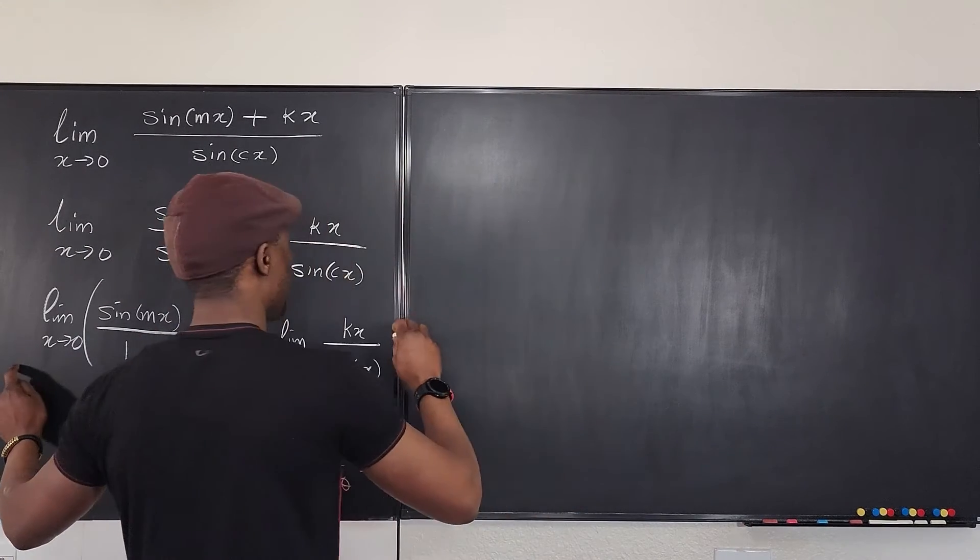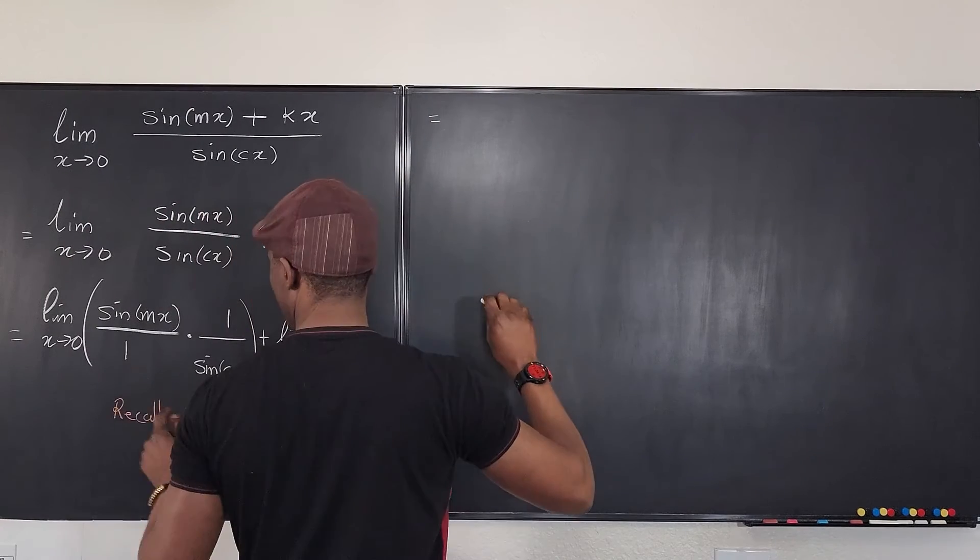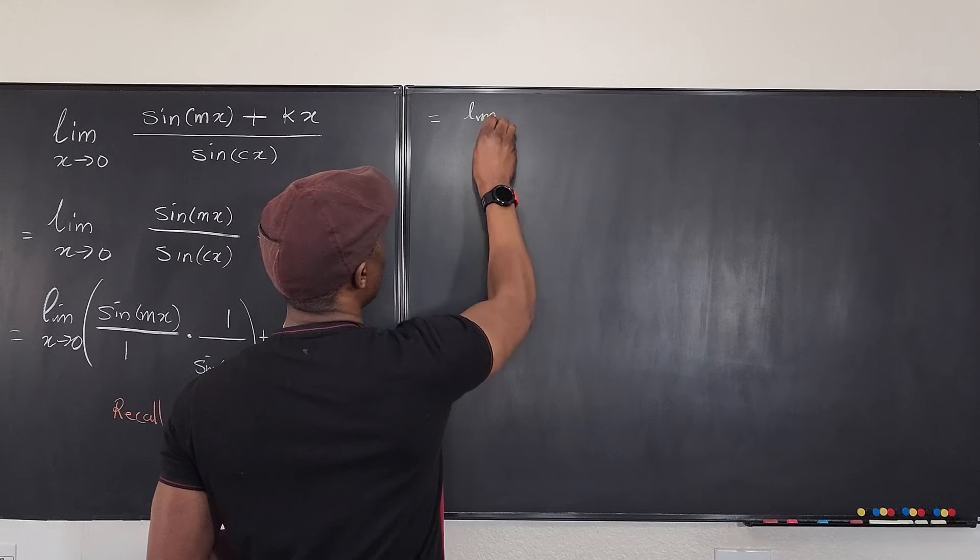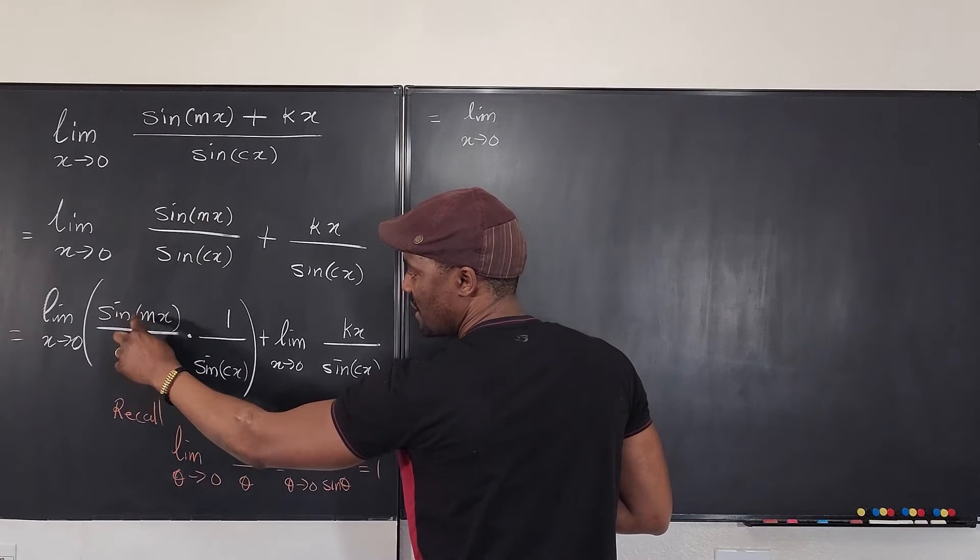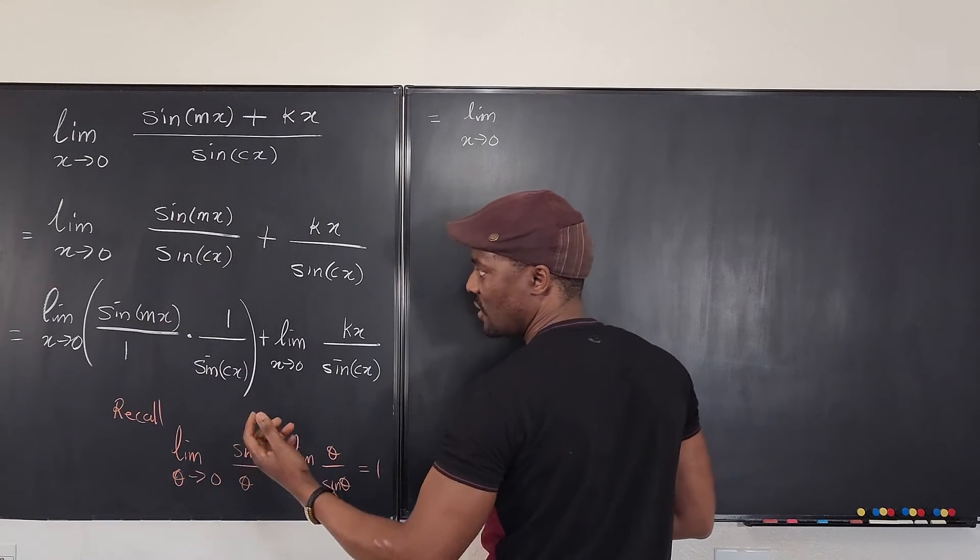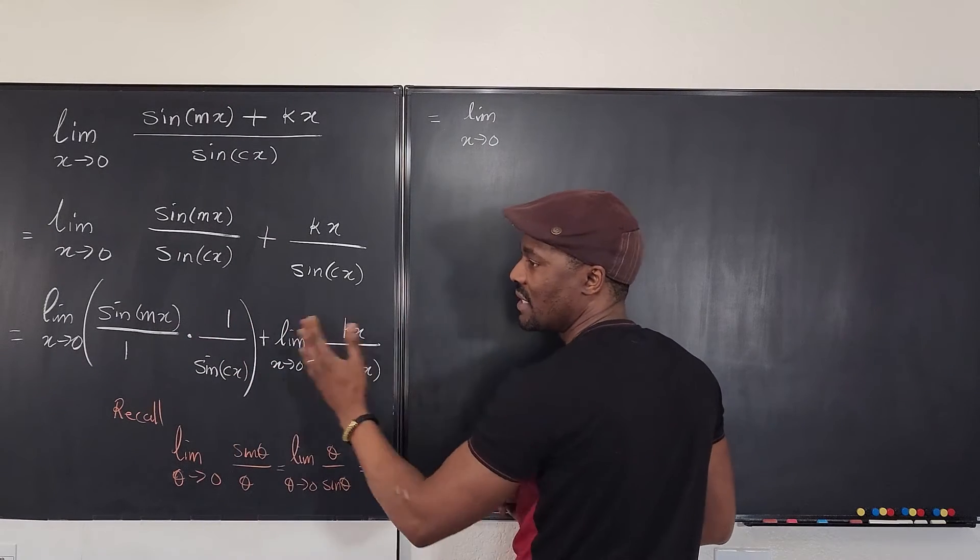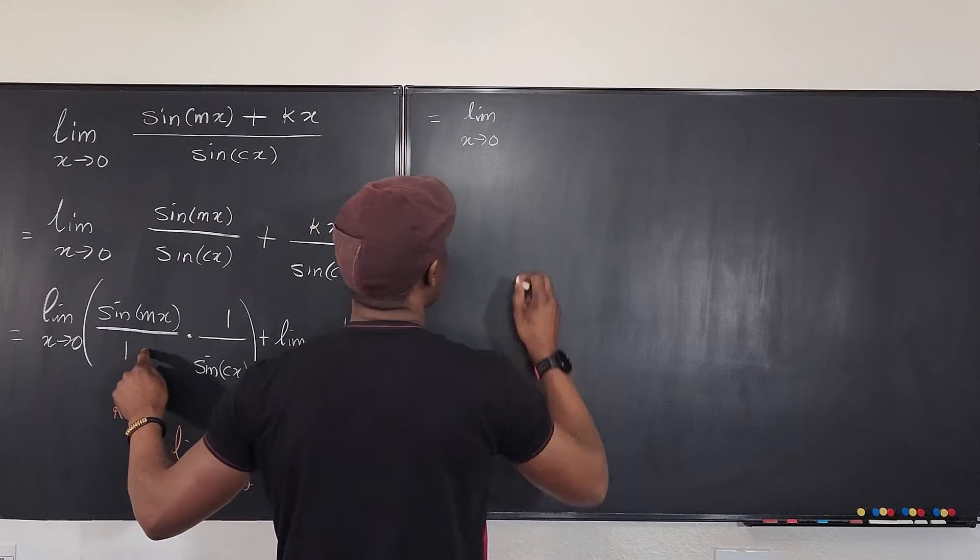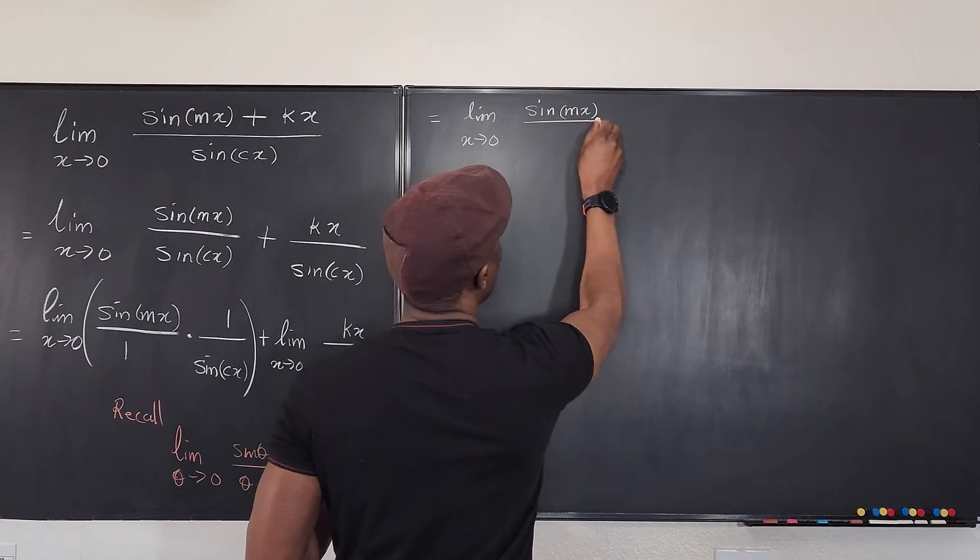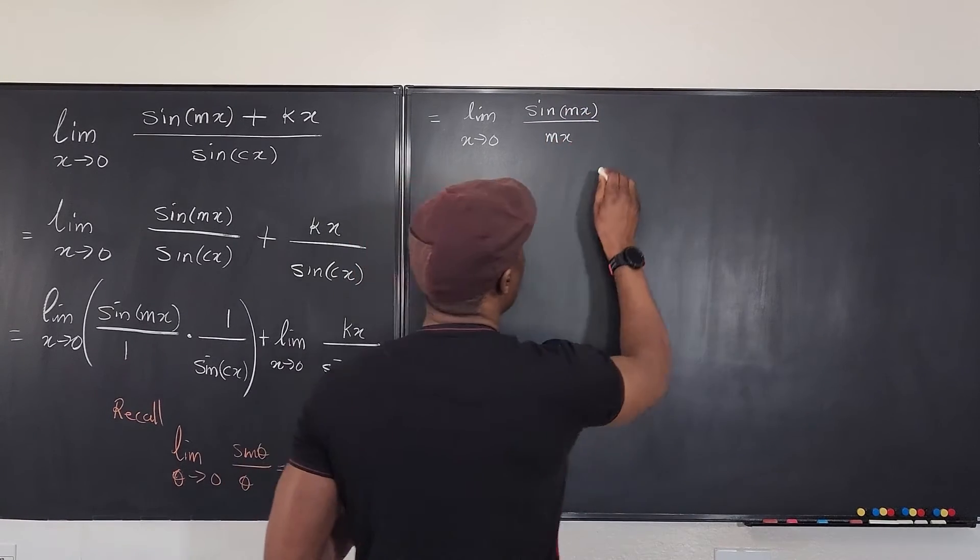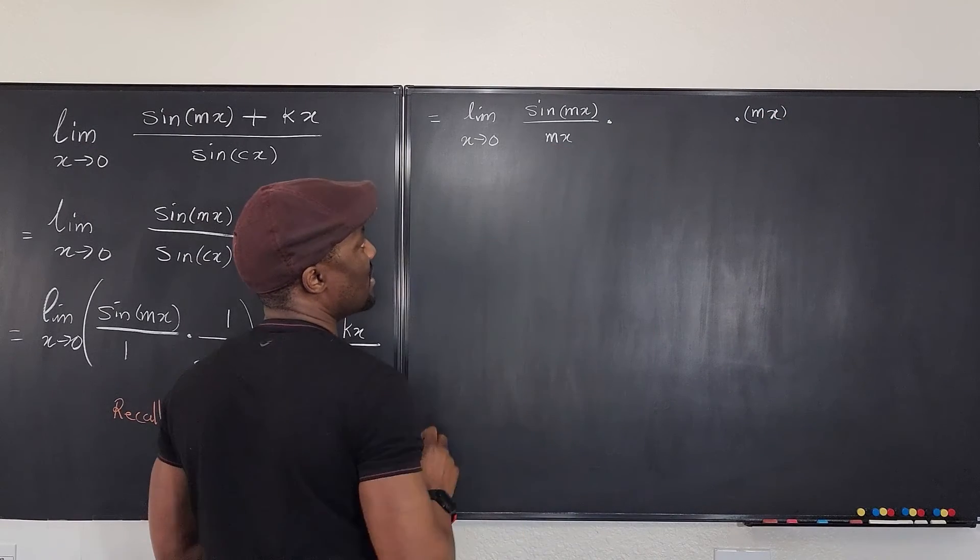So watch what I'm going to do. I'm going to say that this is the same thing. So we're going to say this is the same thing as writing the limit as x goes to zero. Now the first part is sine mx over one, but I want this to be something I can cancel because these two are not the same. So I'm going to write mx down here, but I'm going to cancel out that mx by writing it somewhere else as a multiple or as something that multiplies it. So we're going to have the limit of sine mx over, I'm going to write mx here. But I'm going to go out here and write mx so that this mx cancels out this mx.